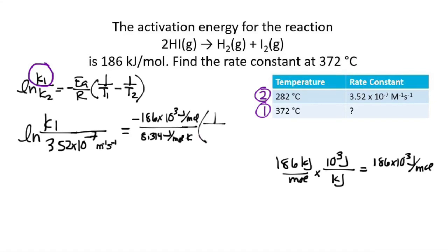And now we're going to have our temperature. So we need one over our temperature. Now our temperatures need to be in Kelvin. So we need to add 273 to each of our temperatures in order to get their Kelvin versions. And we find that 282 becomes 555 Kelvin, and that 372 is 645 Kelvin. And we see that temperature 1 goes first, which we said is 645 Kelvin minus 1 over 555 Kelvin.